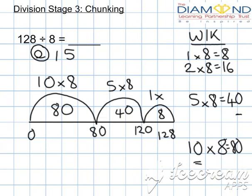And I know 8 is one group of 8. And if I add up all the groups together, 10 eights add 5 eights add 1 eight, that is 16 eights. And the answer is 16, which is extremely close to 15.